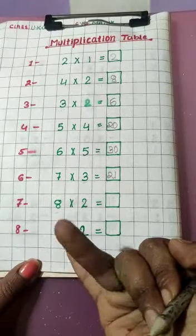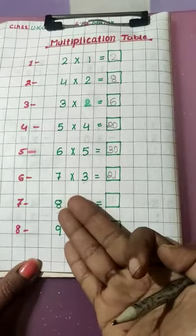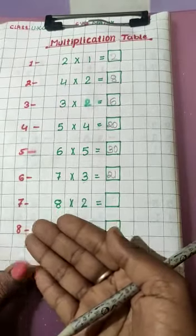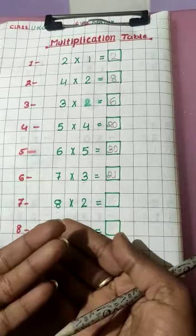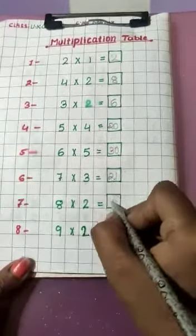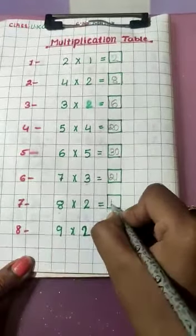Two one jaa two, two two jaa four, two three jaa six, two four jaa eight, two five jaa ten, two six jaa, two seven jaa fourteen, two eight jaa sixteen. Write here, two eight jaa sixteen.